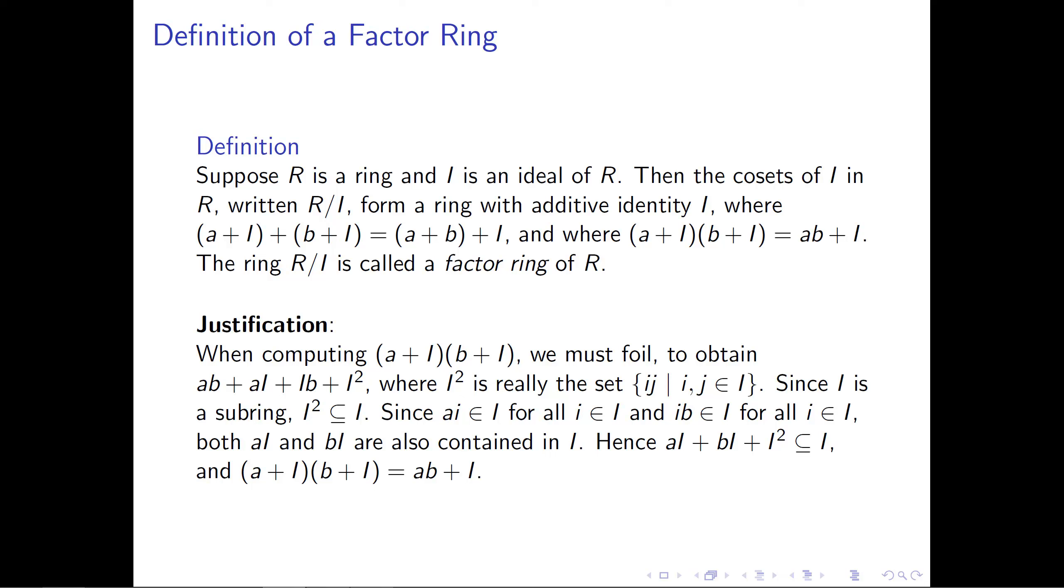And similarly, I is an ideal, so a is an arbitrary element of the ring, but we know that a times i belongs to I, no matter what i is. And similarly, i times b belongs to I, no matter what i is. So these three sets that we have, the aI, the Ib, and the I², each one of them is individually contained inside the set I.